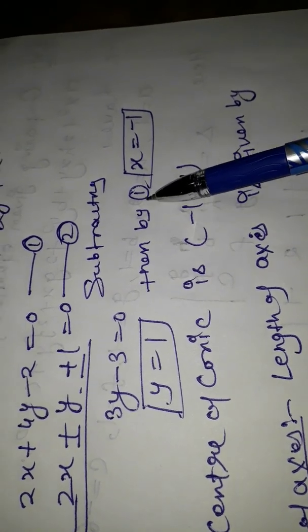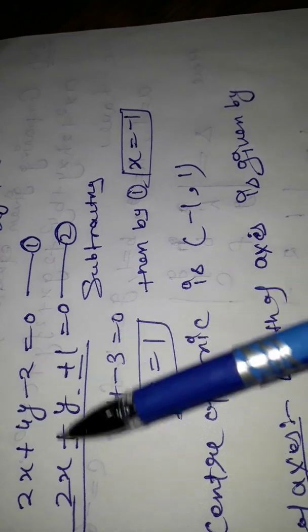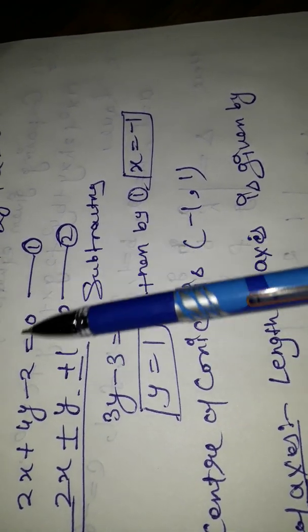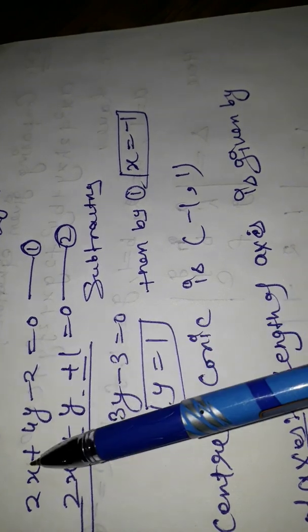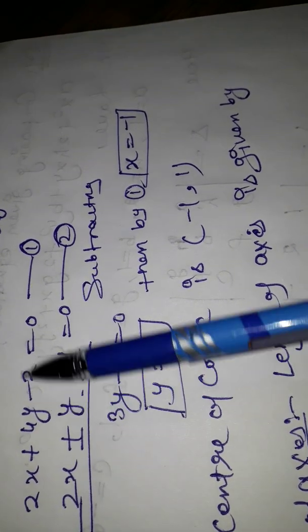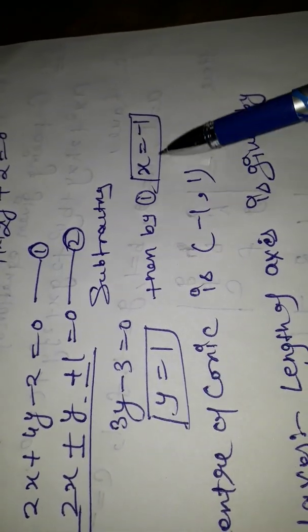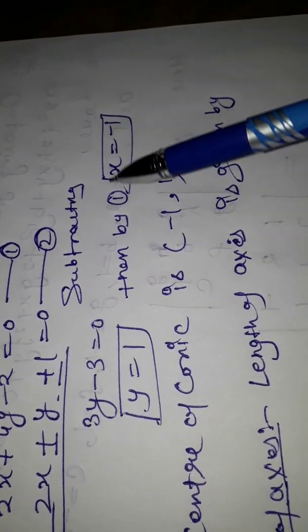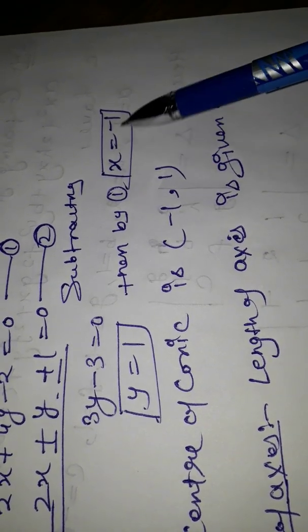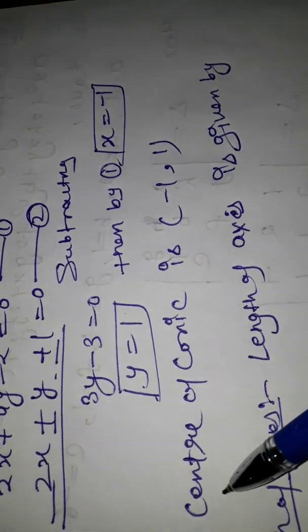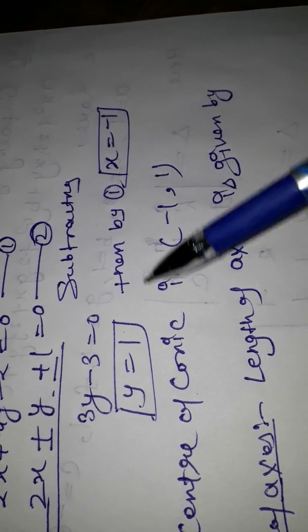Substituting y = 1 into the first equation, we get 2x + 4 - 2 = 0, which gives 2x + 2 = 0, so x = -1. Therefore, the center of the conic is (-1, 1).